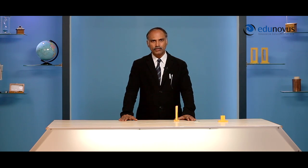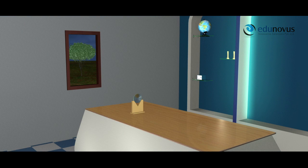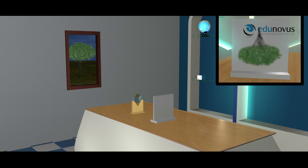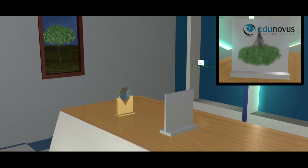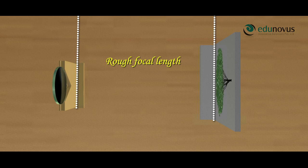Now, let us start the procedure by determining the focal length of the convex lens used in the experiment. We obtain the image of a distant object on a screen — for example, a tree visible through the window. Face the lens towards the distant object and obtain its inverted image on the screen. Move the lens forward and backward until you get a sharp image. Measure the distance between the lens holder and the screen using a scale — this is the rough focal length, which here is 10 centimeters.